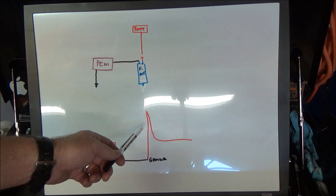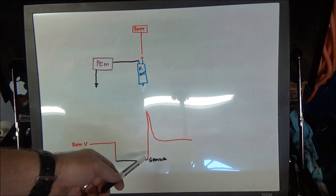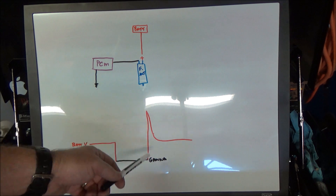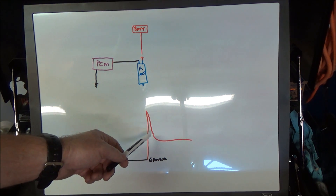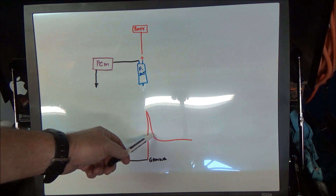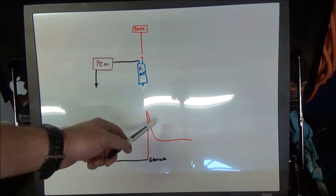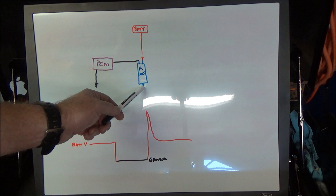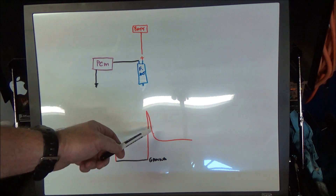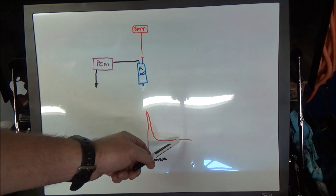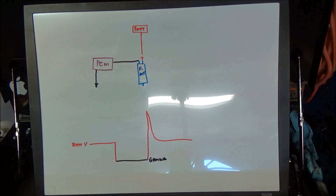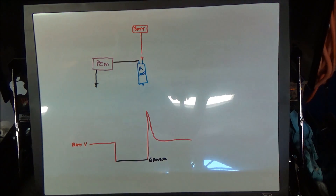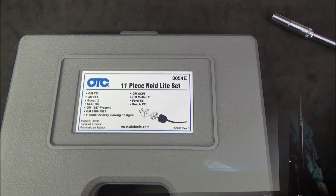The voltage spike happens because once you run power through something it develops a magnetic field, and so this is the collapse of that magnetic field inducing a voltage spike. It'll spike way up and then come back down. If you look closely on a scope you can see a little hump right there — that's the pintle movement of the fuel injector. Then it goes right back to battery voltage and repeats the process the next time the computer wants to fire it.